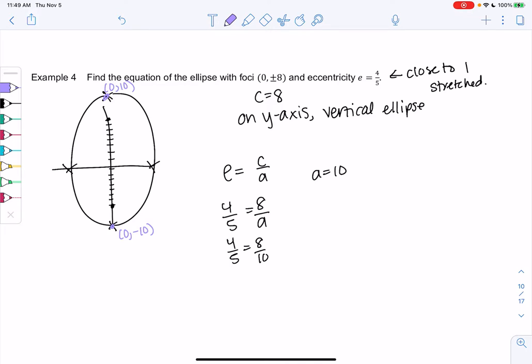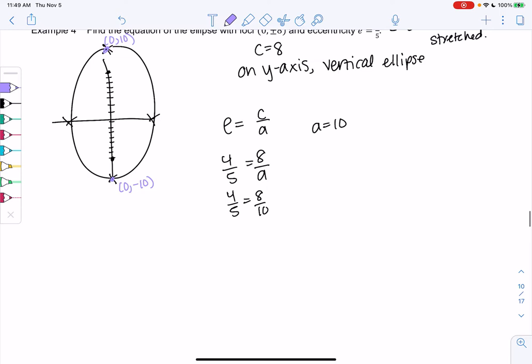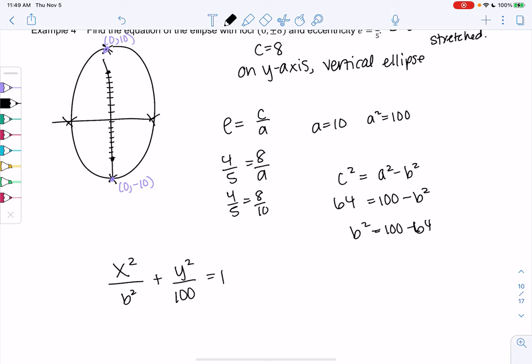We know so far that our equation is x² over b² plus y² over 100 for 10². a will be 10, a² will be 100 equals 1. So we're just going to figure out what b² is, just like before. c² is a² minus b². Maybe you could pause and solve this on your own. But what do we get? We get c is 8, so 64 is c² equals 100 minus b². So I get b² is 100 minus 64, which is 36.